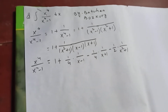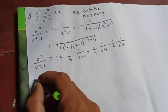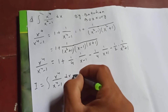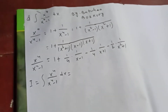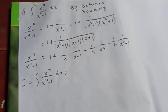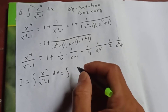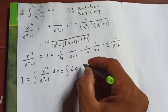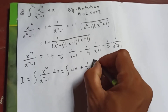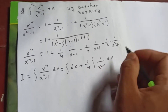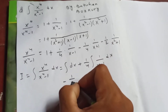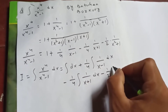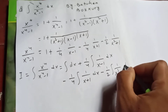Let our integral be I. So I is the integral of x to the 4 over x to the 4 minus 1 dx. We integrate each term separately: integral of dx, plus one-fourth times integral of 1 over x minus 1 dx, minus one-fourth times integral of 1 over x plus 1 dx, minus one-half times integral of 1 over x squared plus 1 dx.